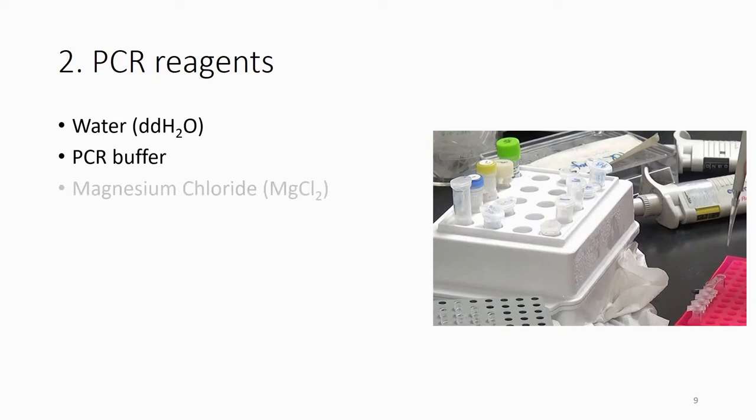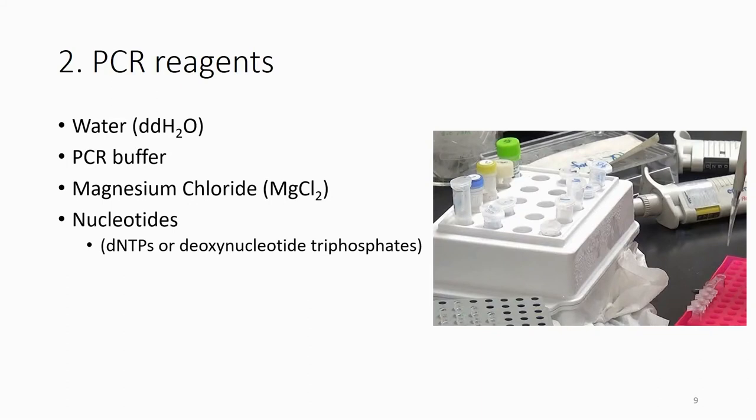PCR buffer, magnesium chloride, nucleotides. So these are the A, T, C, G, but it's not a sequence but just a building block. So you have A, T, C, G.